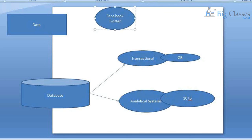In transaction systems and analytical systems, we used to have only one type of data — structured, relational data. But nowadays data is generated in multiple forms: you can have structured data, semi-structured data, as well as unstructured data.